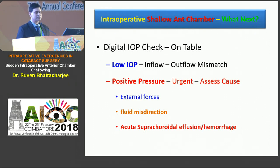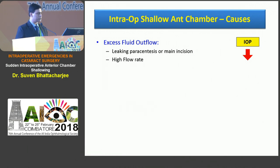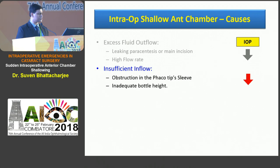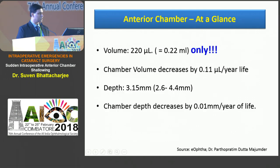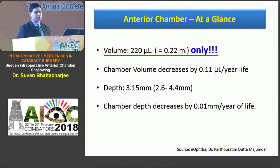The causes could be external forces, fluid misdirection, or suprachoroidal effusion or hemorrhage — all three need urgent attention. Excess flow could be because of a leaking paracentesis or high flow rate. Insufficient flow could be due to obstruction of the phaco sleeve or inadequate bottle height. The big mechanical problems are a tight speculum, drapes, or retrobulbar hemorrhage, fluid misdirection, suprachoroidal effusion, and suprachoroidal hemorrhage. Remember — the anterior chamber has only 0.22 ml of fluid, so that's what you're playing around with.